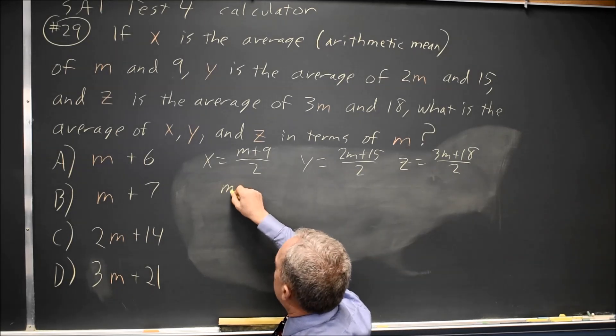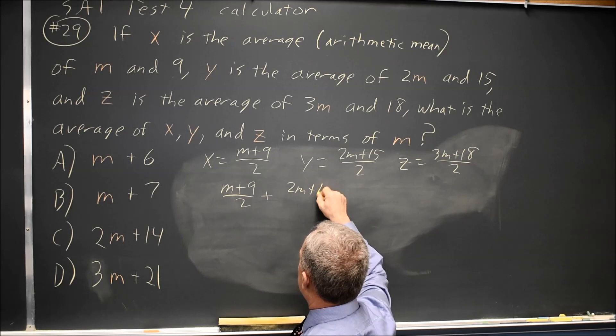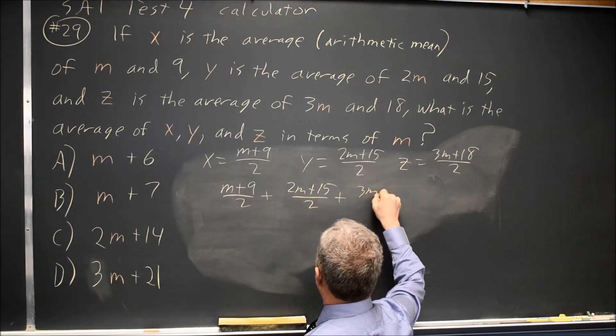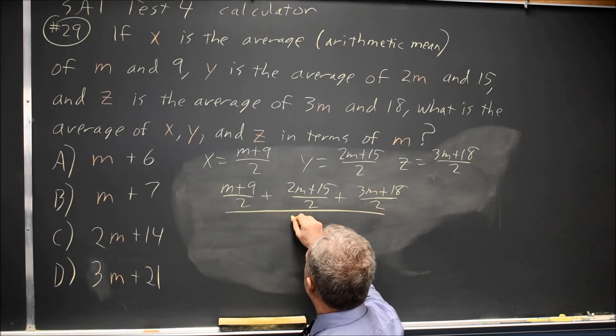So that would be M plus 9 over 2, plus 2M plus 15 over 2, plus 3M plus 18 over 2. Add them up, divide by 3.